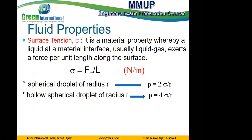One of the properties remaining here is surface tension. What is surface tension? It is a material property — the symbol is sigma. It is a material property whereby a liquid at a material interface, usually between liquid and gas, exerts a force per unit length along the surface.